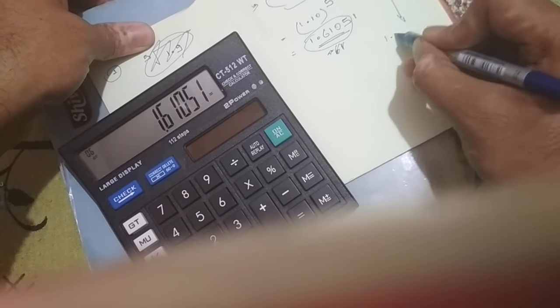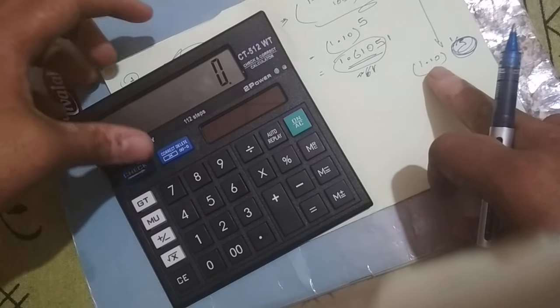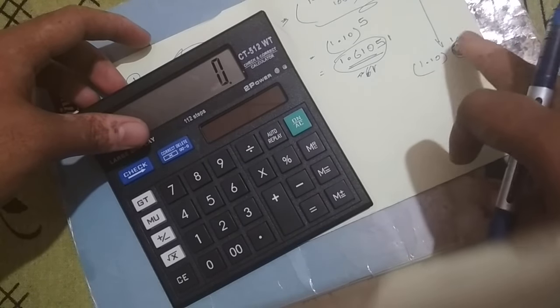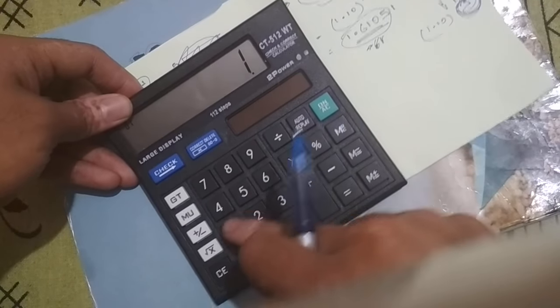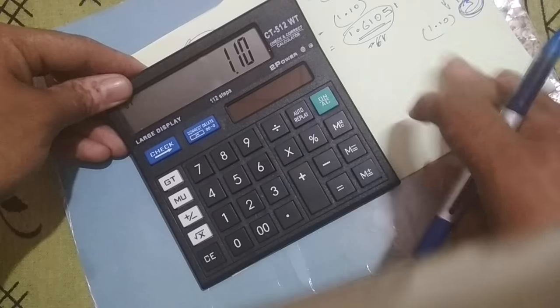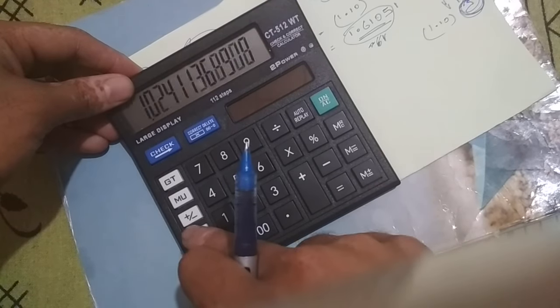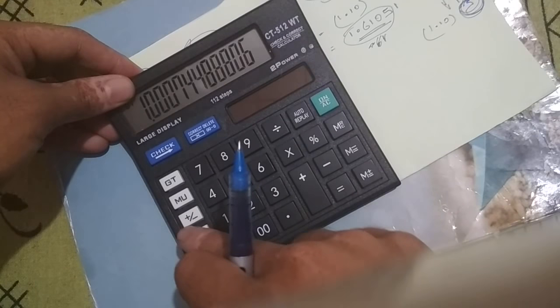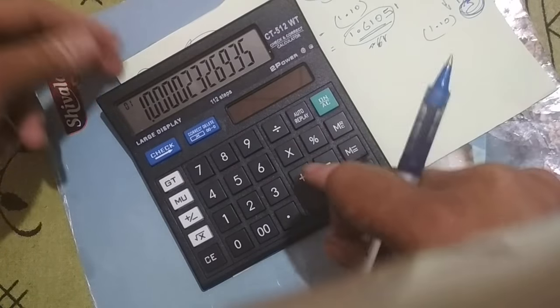Next we will see how we can find 1.10 to the power 1 by 5. So you have to press 1.10 first, then press multiply, equal to 12 times—1 square root 12 times. Then you have to subtract 1.